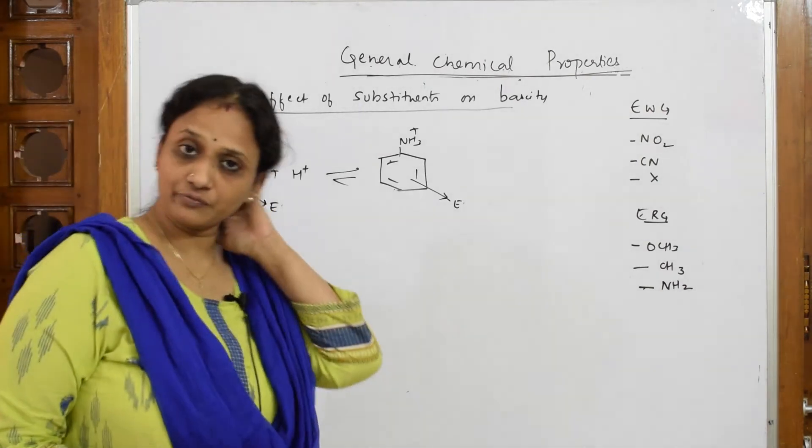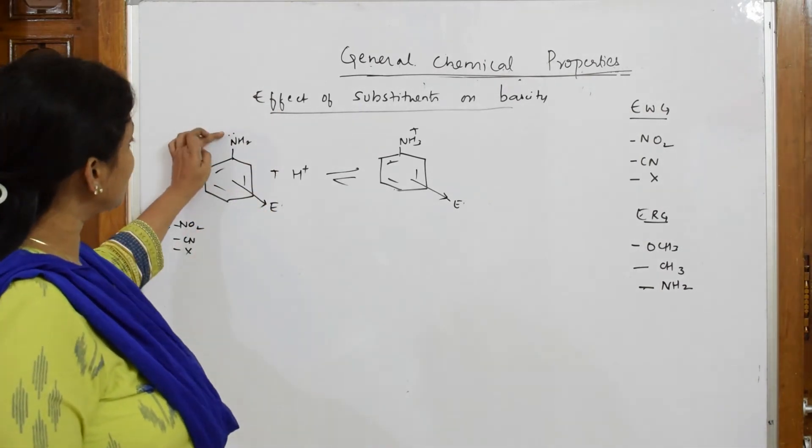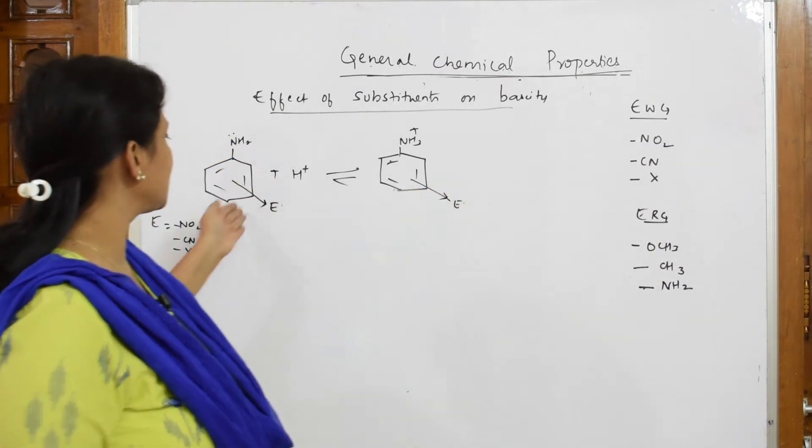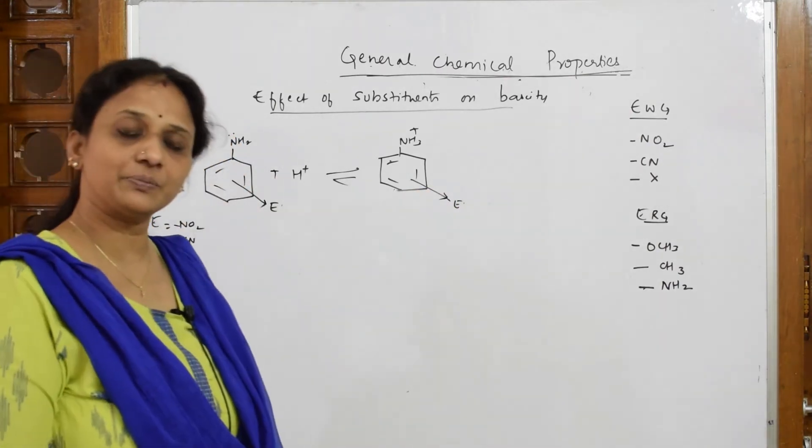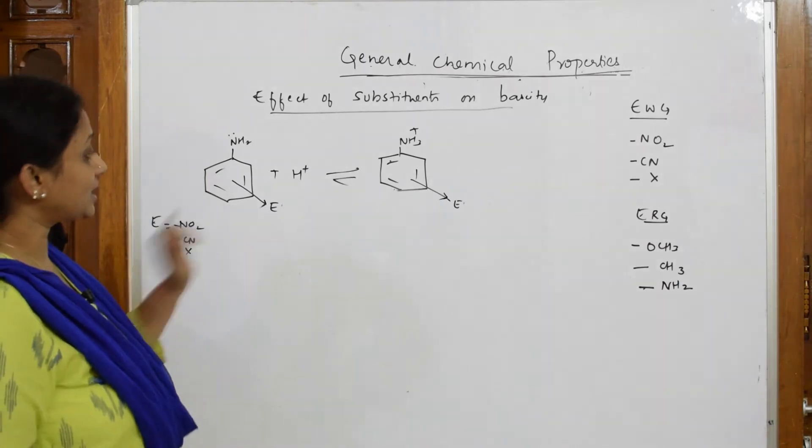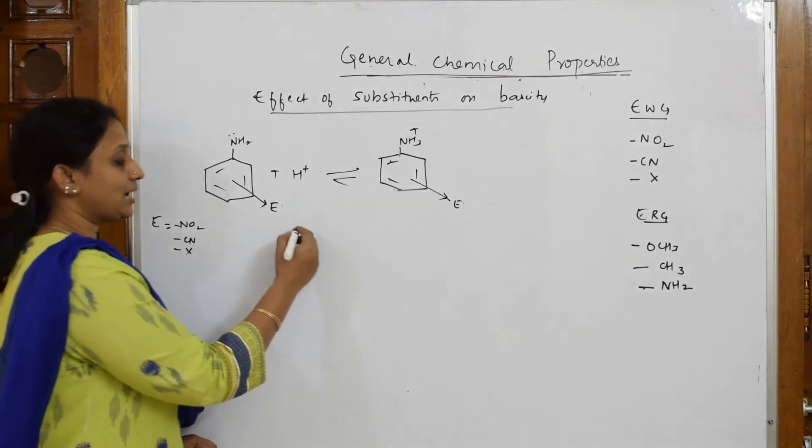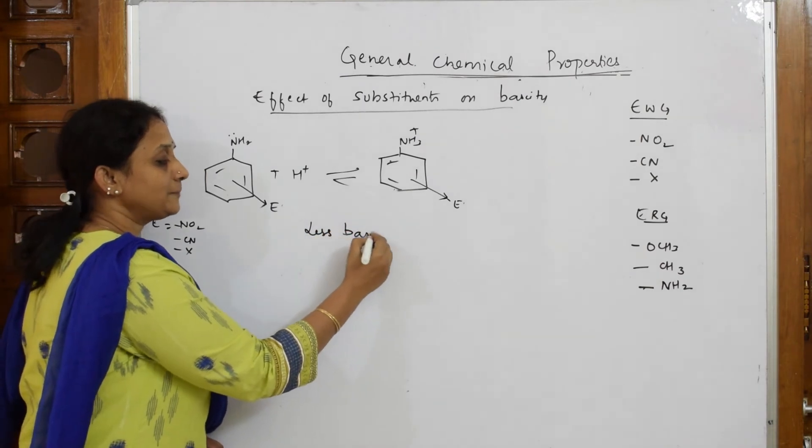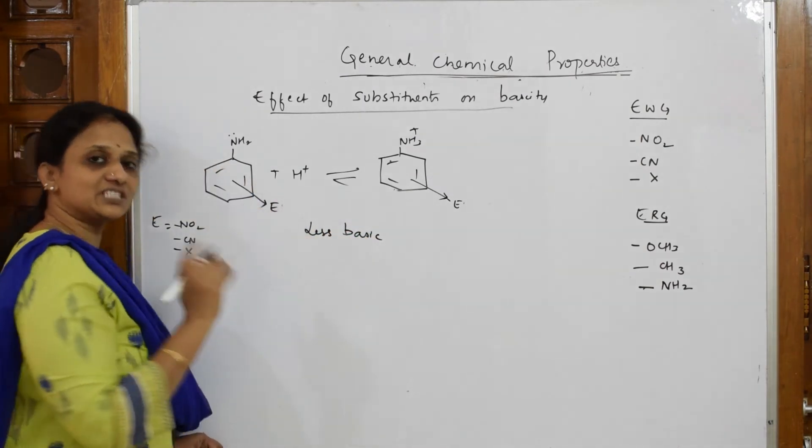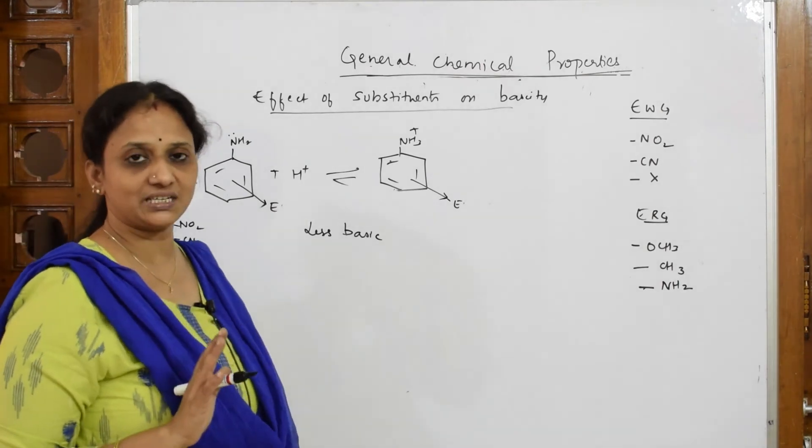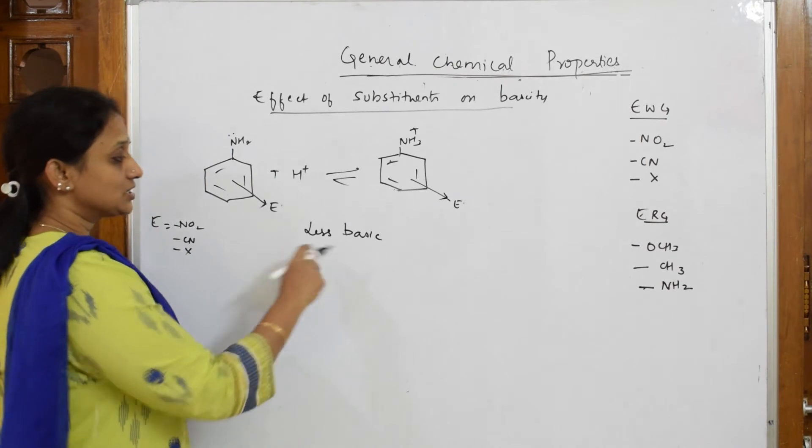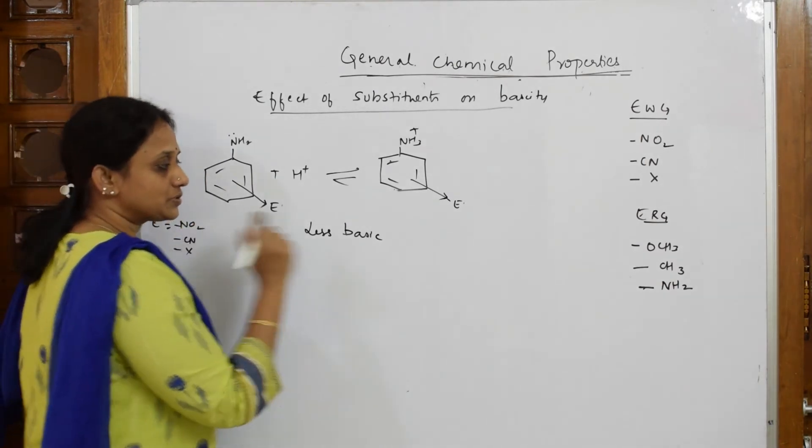So, whenever you have electron withdrawing groups, they are going to drag the electrons from here. They will pull the electrons towards themselves. If any of these are present here, anywhere on the benzene ring, they are going to drag the electron density. And what will happen to the basicity? They are less basic. Why? Because when they are trying to drag the electrons, when something releases electrons only it is basic in nature. But when this is trying to drag the electrons towards it, so this is less basic.